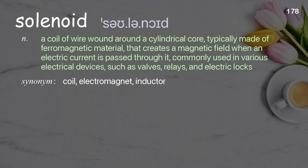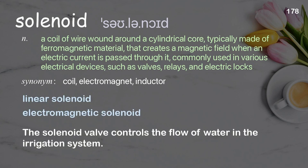Solenoid: a coil of wire wound around a cylindrical core, typically made of ferromagnetic material, that creates a magnetic field when an electric current is passed through it; commonly used in various electrical devices such as valves, relays, and electric locks. Examples: linear solenoid; electromagnetic solenoid; the solenoid valve controls the flow of water in the irrigation system.